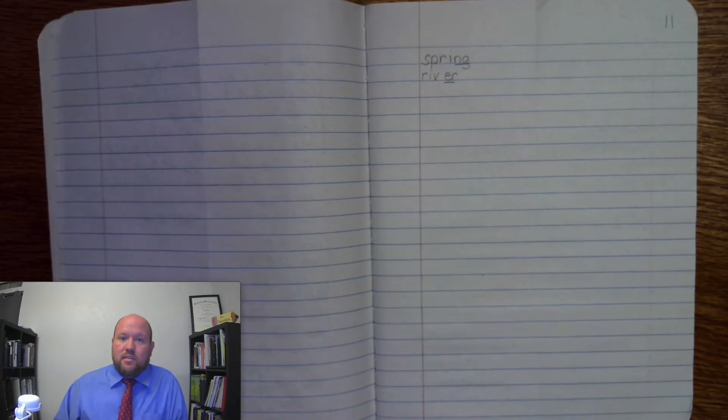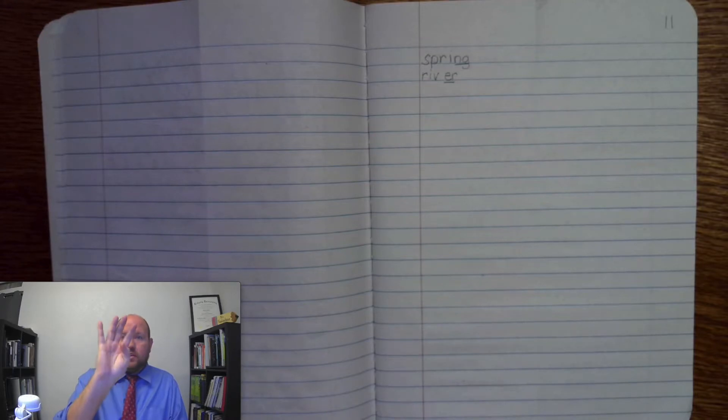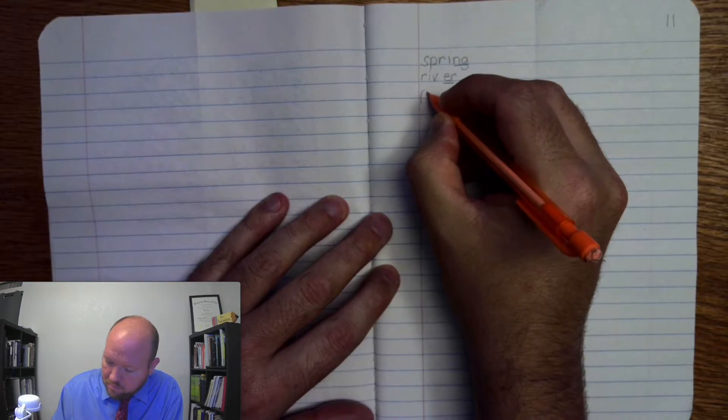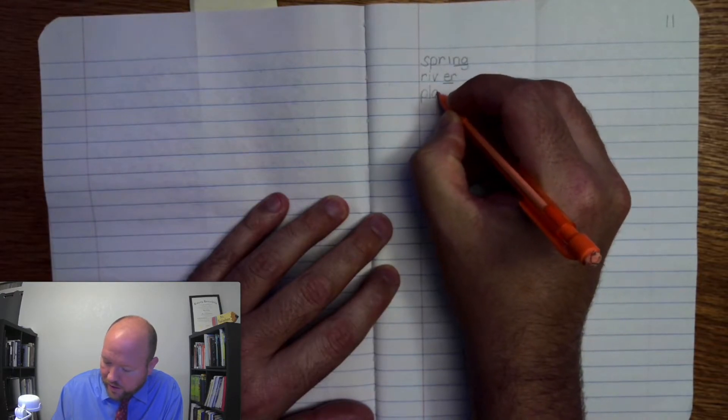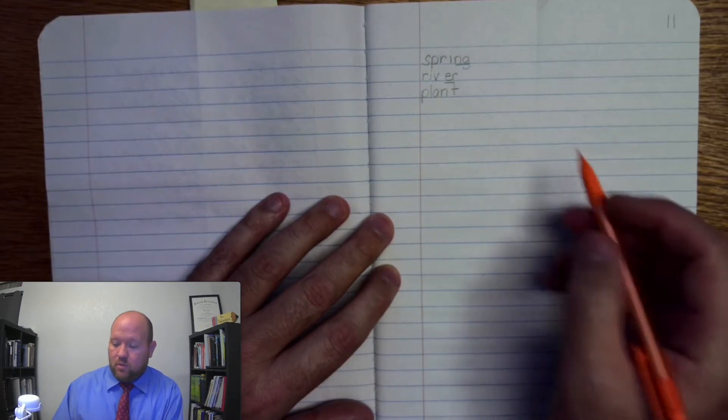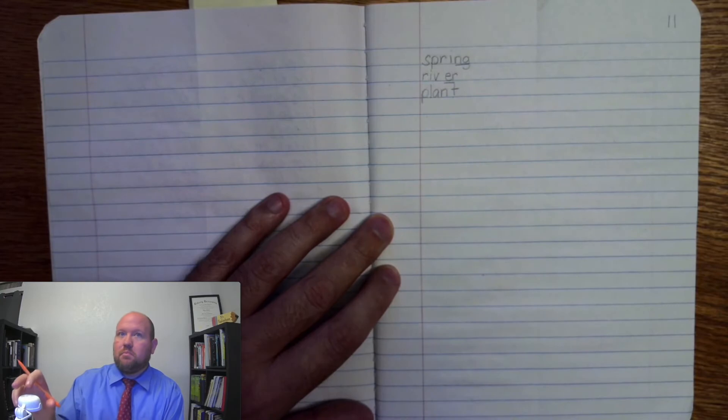The next word is plant, like I'm going to plant something, or even the noun, like a tree is a plant. Plant, base word plant. P-L-A-N-T, plant. Okay, plant, P-L-A-N-T, plant. Markings, P-L-A-N-T, plant.